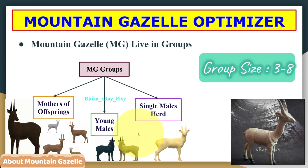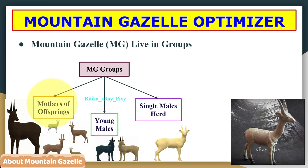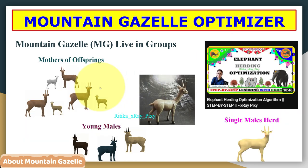Mountain gazelles form three different types of groups. The first includes herds consisting of mothers and offspring. The second is a herd of young males, and the third consists of single males. Male mountain gazelles often engage in frequent battles, competing for resources and female gazelles.